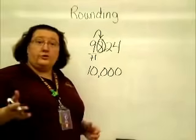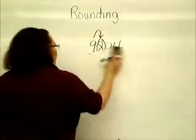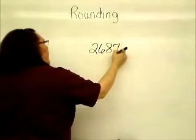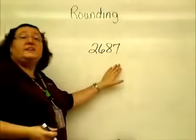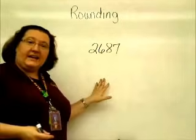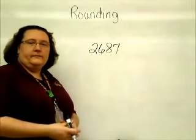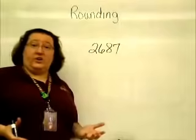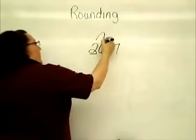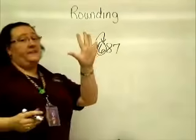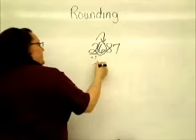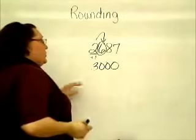Now I'm going to give you some problems to try on your own. Two thousand, six hundred, eighty-seven — round to the nearest thousand. Give this one a try. Stop the video, and when you're finished push play again and we'll check the answer. Alright, let's take a look. Ones, tens, hundreds, thousands — right next door. Six says five or more, add one more to my number. So it's going to round up to three thousand.